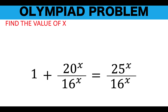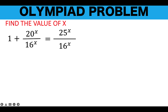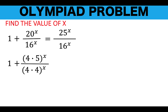Let's simplify this further. Notice that 20 and 16 have a common factor of 4, but we cannot just cancel that out unless we can separate 20 raised to x into two exponential numbers. Let's rewrite 20 as 4 times 5, and 16 as the quantity 4 times 4, raised to exponent x. Also, 25 can be written as 5 times 5, so we write it as 5 squared raised to x, and the denominator is 4 squared raised to x.